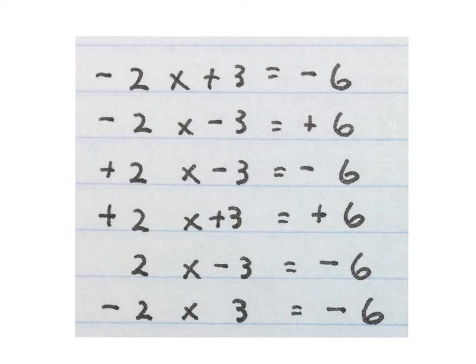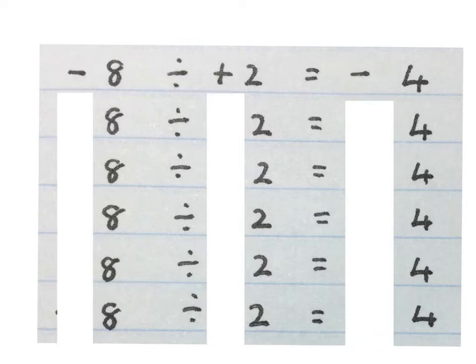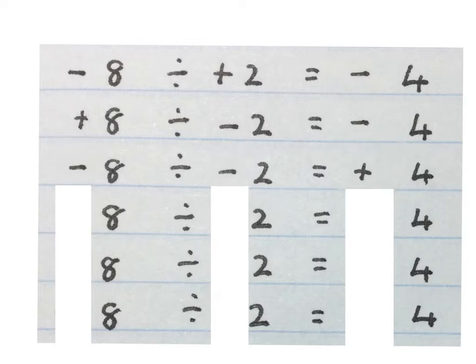Please stop the video and get your brain around this. Luckily for us division uses the same rule. 8 divided by 2 will always give us 4. If the signs in front of these numbers are different the answer will be a minus. And if the signs are the same the answer will be a positive.